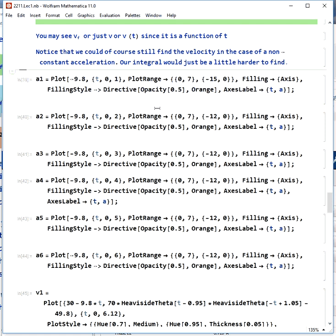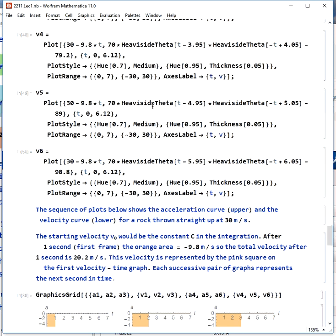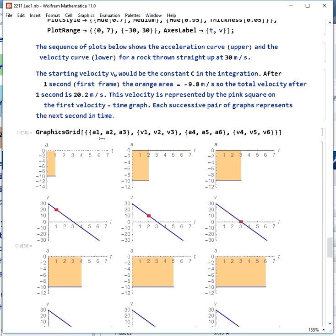We can compare the plot of area under the acceleration curve and velocity as a function of time below. If we look here, this has the acceleration curve, which is the top one that has the filled-in area, and the velocity curve, the lower one with the pink square, for a rock thrown straight up from the ground at 30 meters per second. Our starting velocity, v0, is, again, that constant c in the integral.